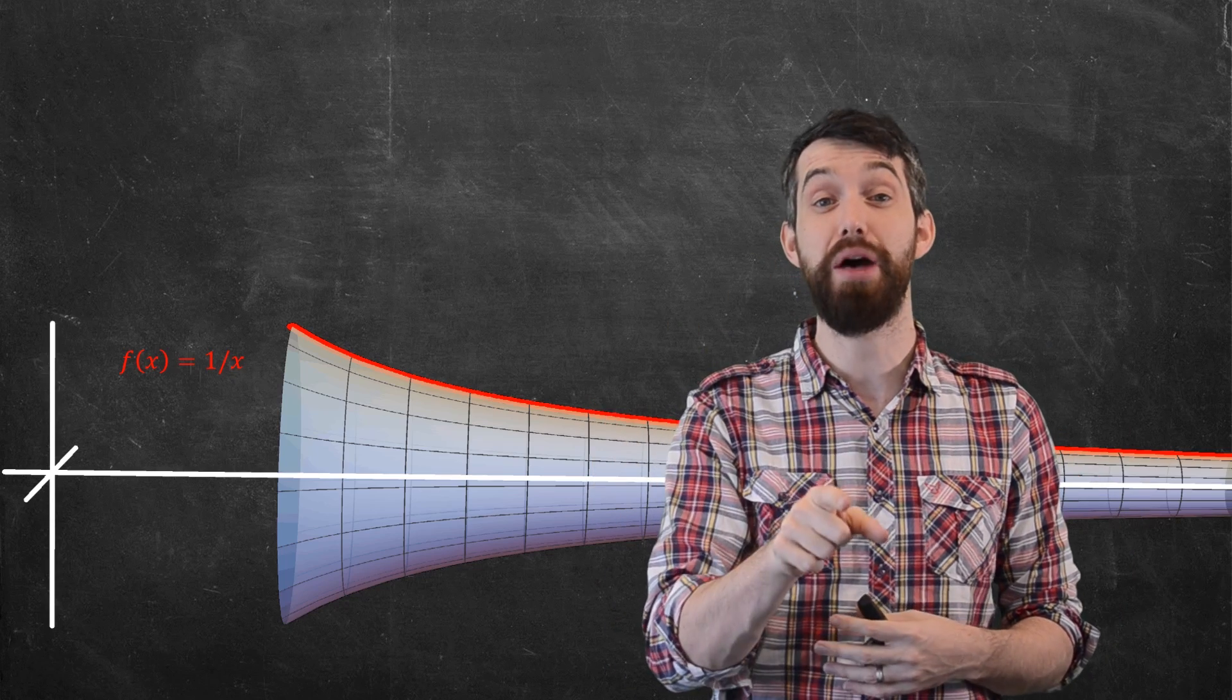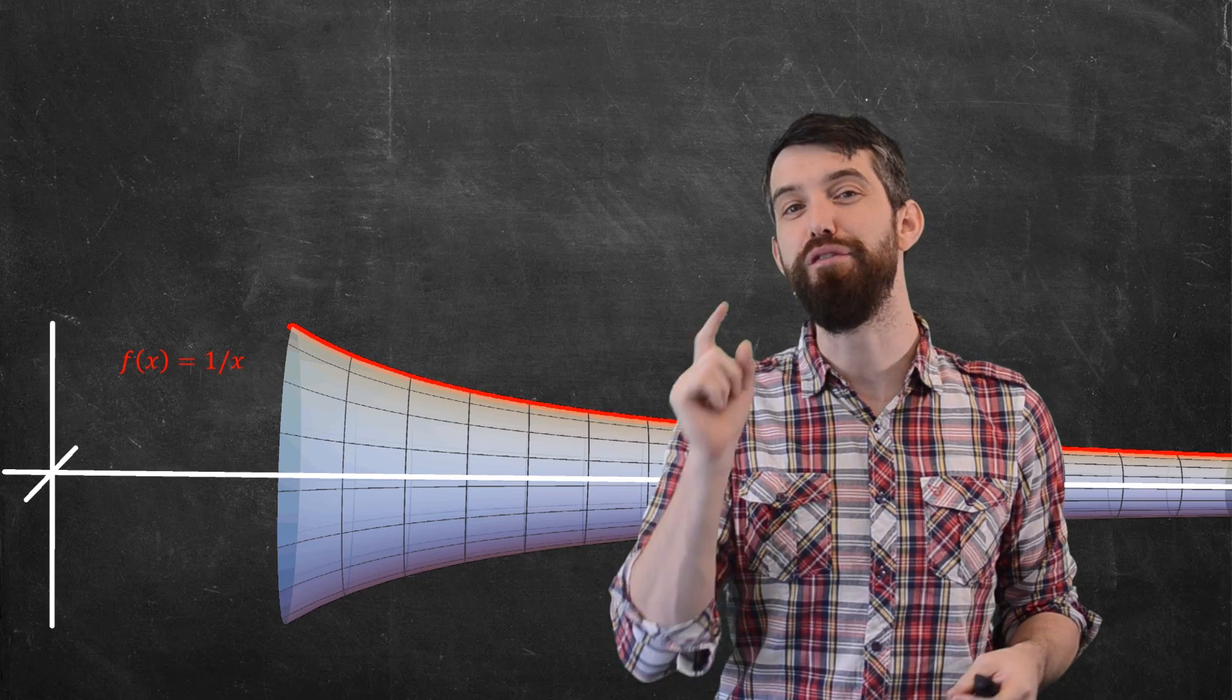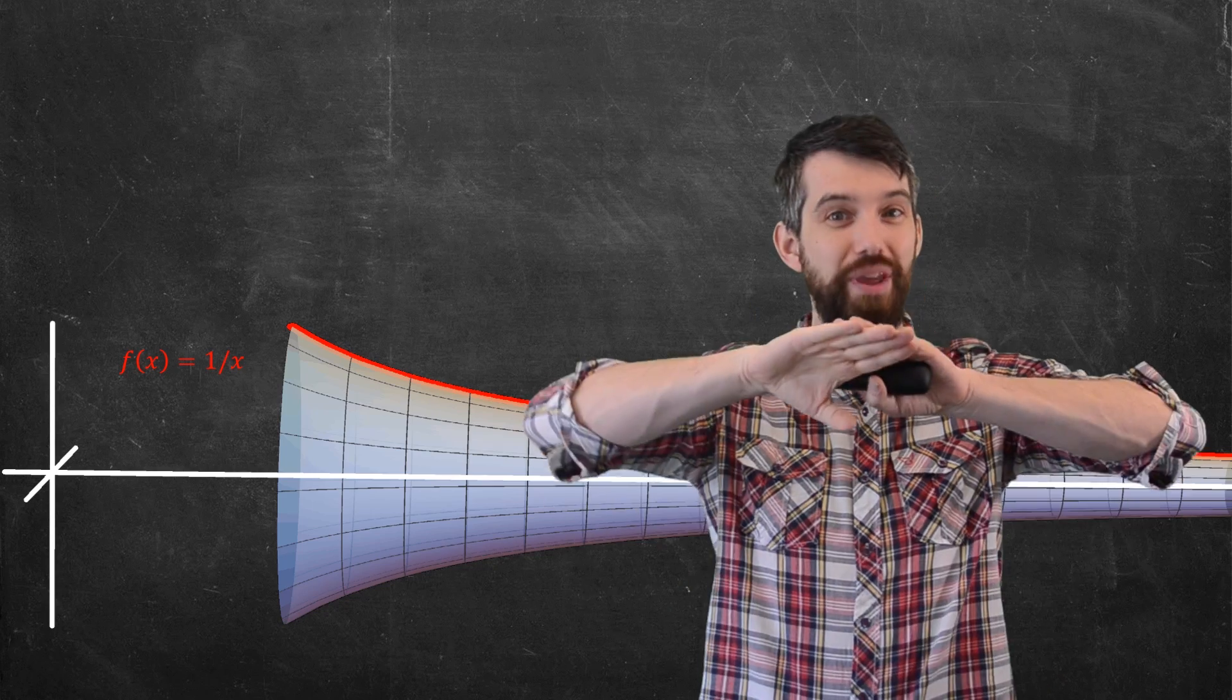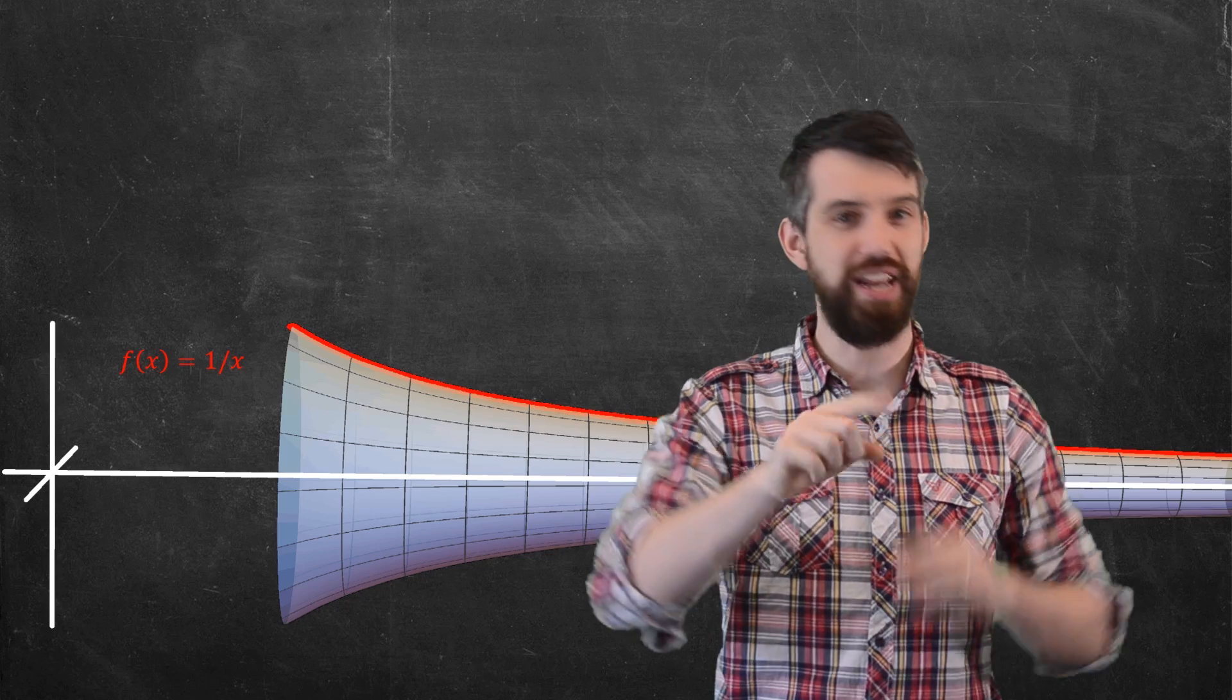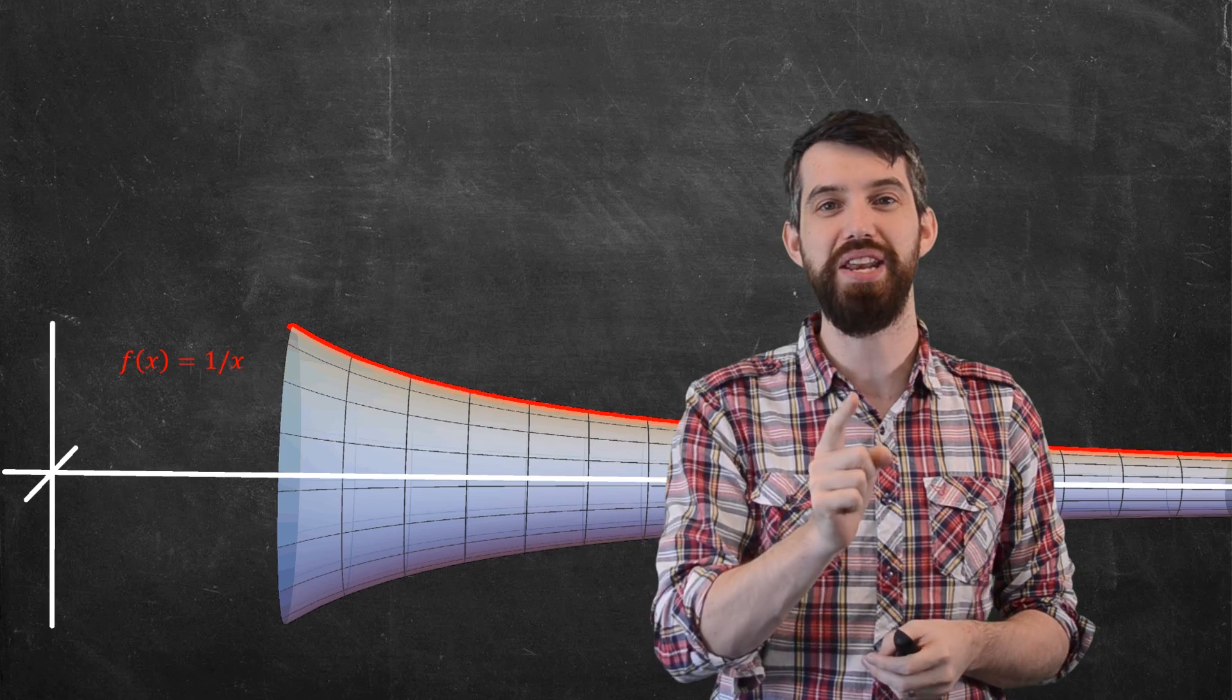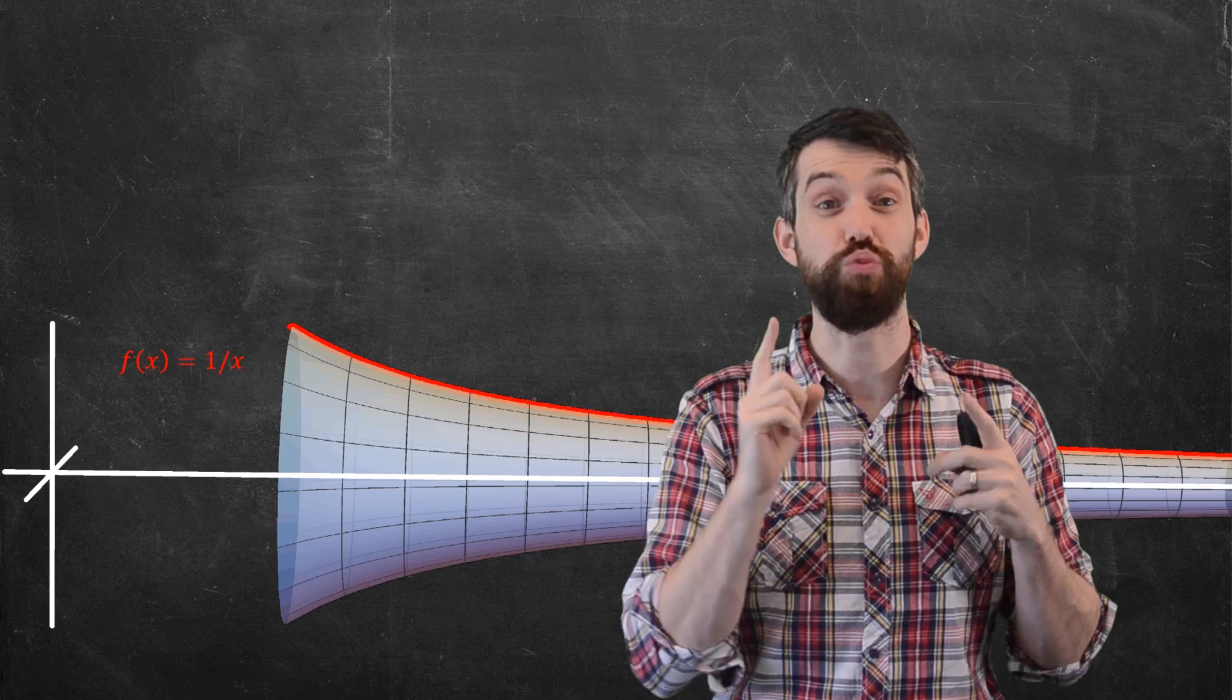Now the magic of Gabriel's horn is that the surface area of this thing, it actually diverges to infinity. It has an infinite surface area. The improper integral we will set up for it diverges. But the volume that is contained within this infinite surface area is somehow finite. That it converges to a finite number over this infinite domain. It's really interesting.